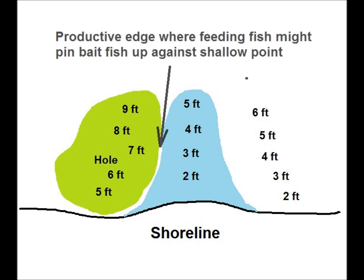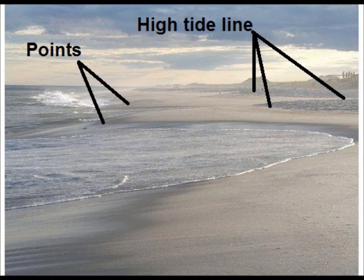The value of points, in terms of fishable structure, is that they provide a place for fish to drive bait up against. Because of the shallower bottom contour, waves tend to break on points, creating a lot of turbulence which smaller bait fish have trouble swimming in. This provides a feeding advantage for larger predatory species. Because of this, the side of the point that has a hole next to it is typically the side of the point I would concentrate most of my fishing efforts. When the ocean gets to work on a stretch of beach, many times the structure comes in combinations.